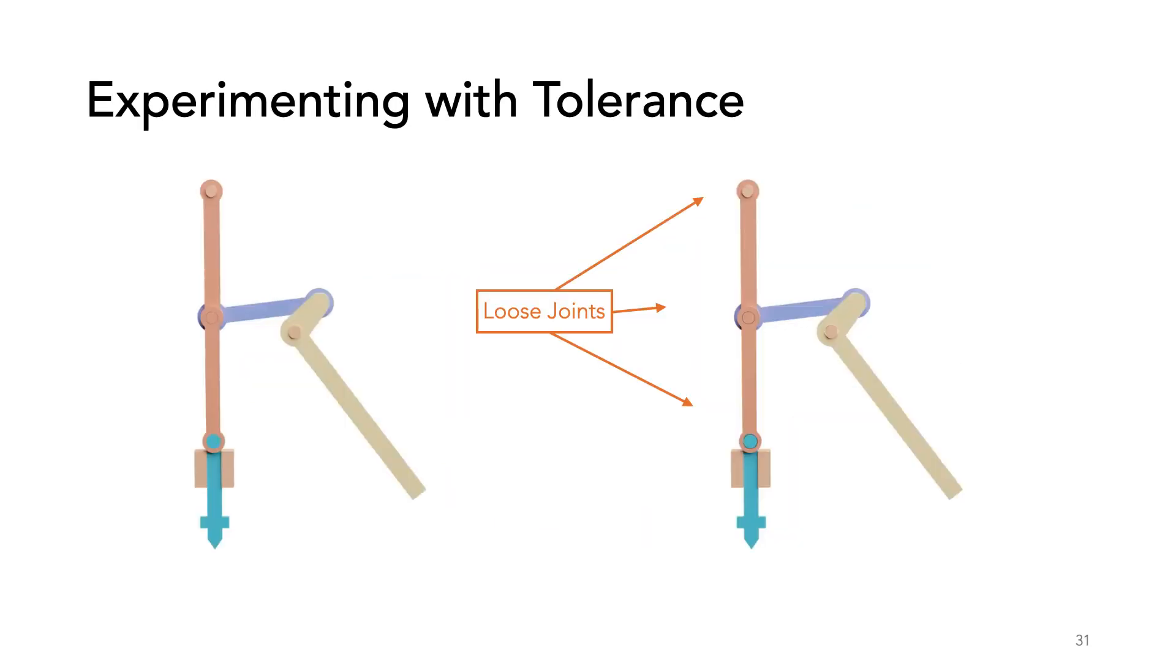Because of this, we can experiment with tolerances in the joints. Here we lift a lever arm with tight and loose joints. You can see the different dynamics when the joints are looser.